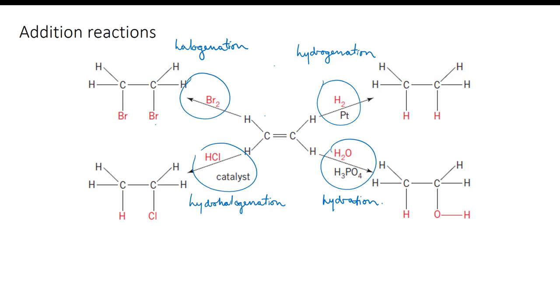In all of these reactions, a carbon-carbon double bond is being broken so that new atoms can be added to the molecule. The result is an alkane of some kind, a straight alkane from hydrogenation, a haloalkane from hydrohalogenation and from halogenation, and an alcohol from hydration.